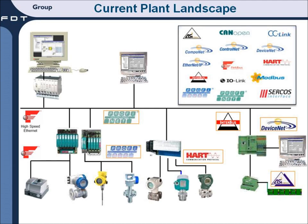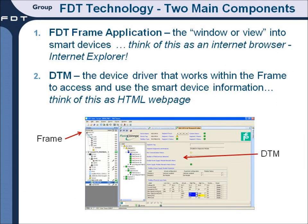The ideal solution is to have one tool to use to access all this information. The tool also needs to be simple to use, but powerful enough to get the job done. FDT technology enables that ideal solution. FDT technology has two main components: first, the frame application, and then the DTM. As shown in this graphic, the frame provides a window into the smart device. The DTM is created by the supplier and includes all the functions and capabilities available in that smart device. Think of the DTM as a device driver, similar to a printer driver, that allows a computer access to all the features in the printer.